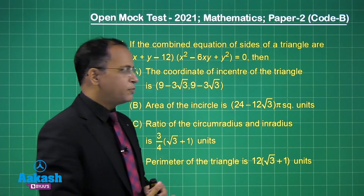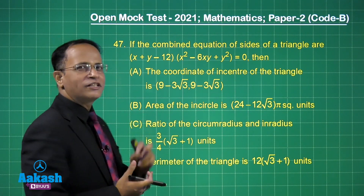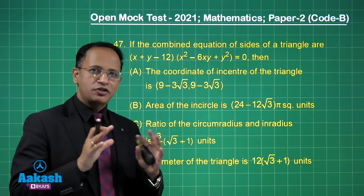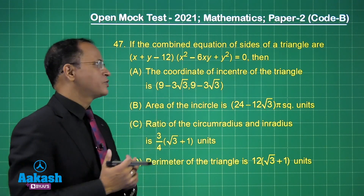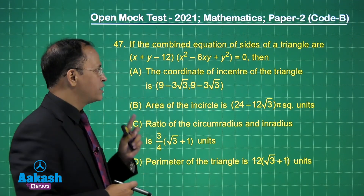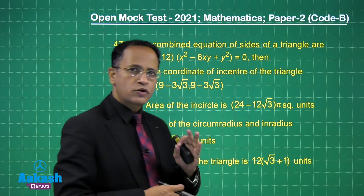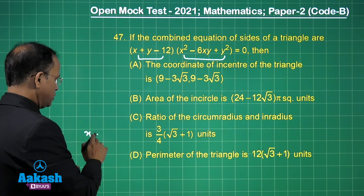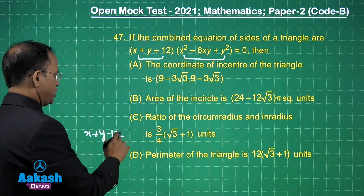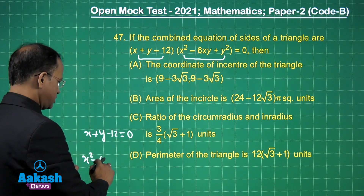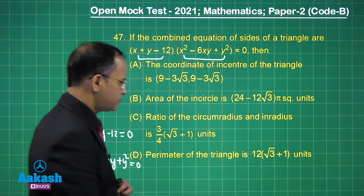Now let us discuss the very interesting question number 47. A combined equation of the sides of a triangle is given: (x + y − 12)(x² − 6xy + y²) = 0. We write the individual equations first, which will help with all the calculations. The first equation is x + y − 12 = 0, and the second is x² − 6xy + y² = 0.